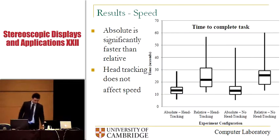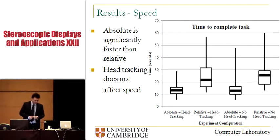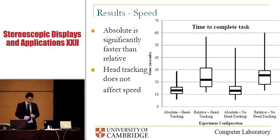Starting with speed, this box plot illustrates the mean time and also maximum-minimum time to complete the task in each of the four configurations. If you look at the first and second plots and then the third and fourth — comparing absolute to relative interaction both with head tracking and without — you will see that the mean completion time for absolute interaction is significantly less than for relative interaction. Therefore, we can say that absolute interaction is indeed significantly faster than relative interaction.